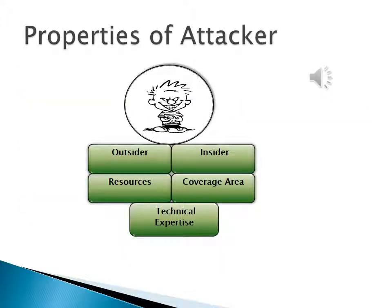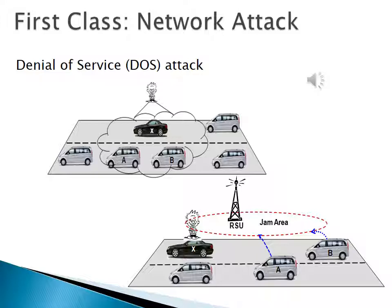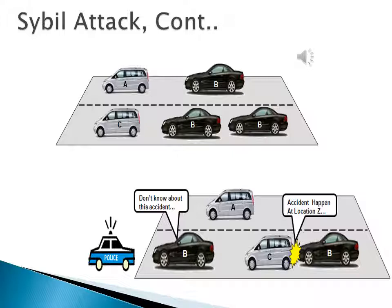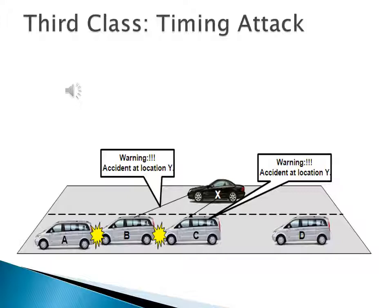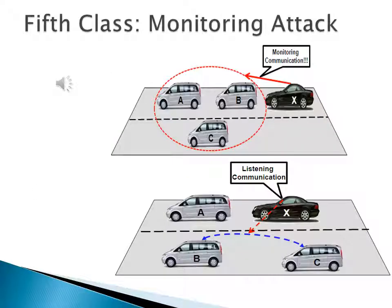Properties of Attacker. The proposed classes of attacks are: Monitoring Attack, Social Attack, Timing Attack, Application Attack, and Network Attack. Under the first class, Network Attacks include Denial-of-Service (DoS) and Distributed Denial-of-Service (DDoS) attacks, as well as the Sybil Attack. The second class is Application Attack, the third is Timing Attack, the fourth is Social Attack, and the fifth is Monitoring Attack.